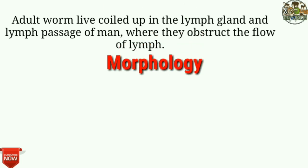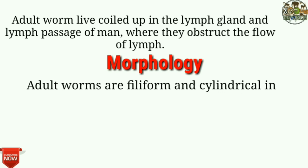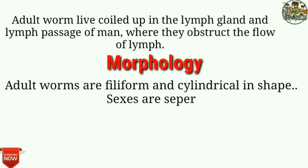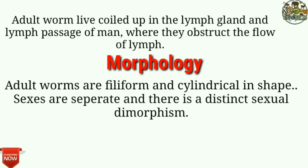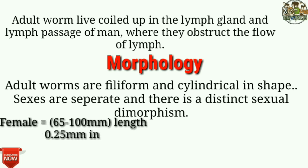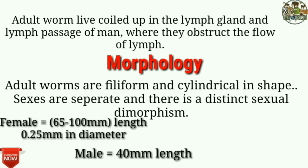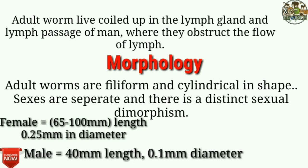Morphology: Adult worms are filiform and cylindrical in shape. Sexes are separate and there is distinct sexual dimorphism. Females measure up to 65 to 100 mm in length and 0.25 mm in diameter, while males measure 40 mm in length and 0.1 mm in diameter.